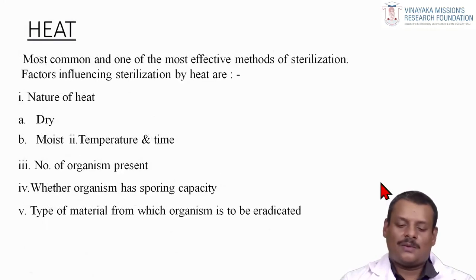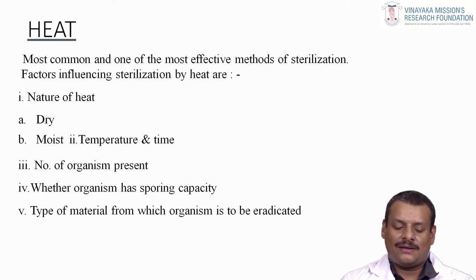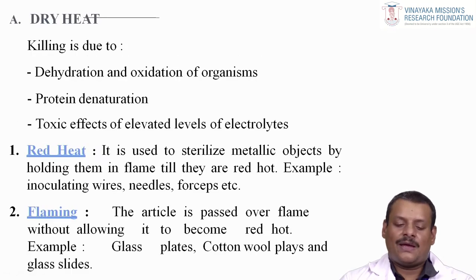Heat is the most common and one of the most effective methods of sterilization. Factors influencing sterilization by heat include the nature of heat — dry or moist — the time and temperature, the number of microorganisms present, whether the organism has sporing capacity, and the type of material from which the organism is to be eradicated. In dry heat, killing of bacteria is due to dehydration and oxidization of organisms, protein denaturation, and toxic effects of elevated levels of electrolytes.